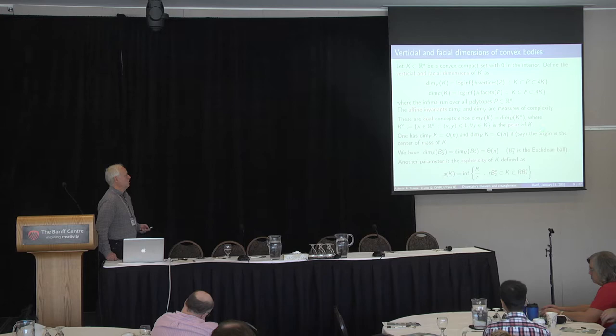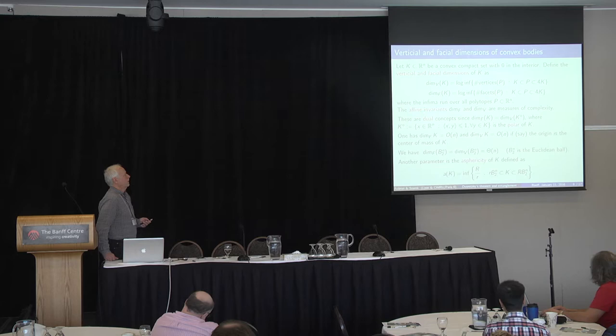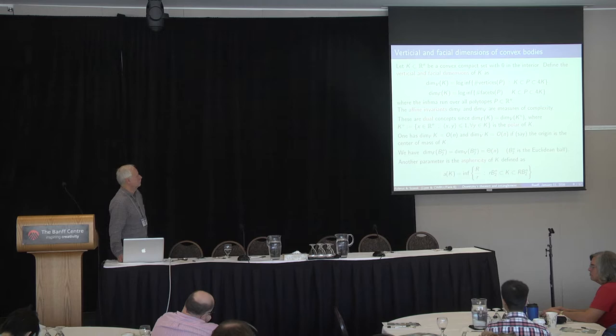Another parameter we use is sphericity of a set. This is just the ratio between the outer radius and the inner radius — how close it is to a ball. As noted, this is an affine invariant; we could have used any ellipsoid, but for our applications it's enough to consider Euclidean balls.